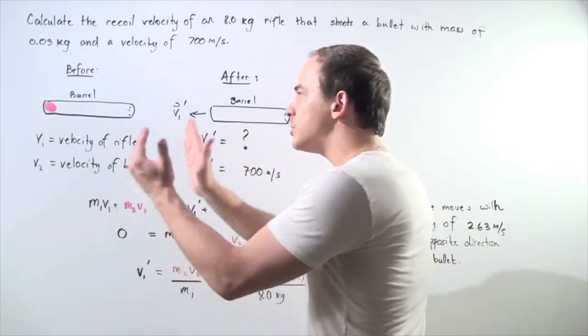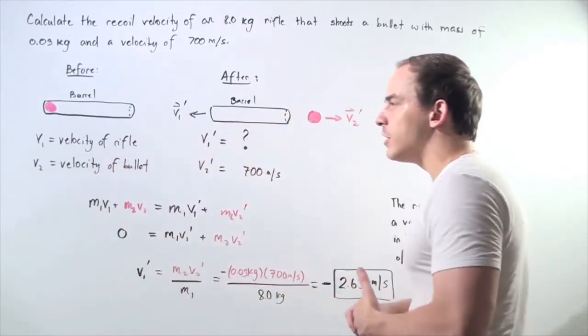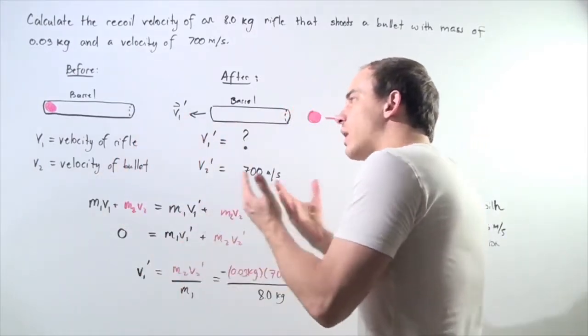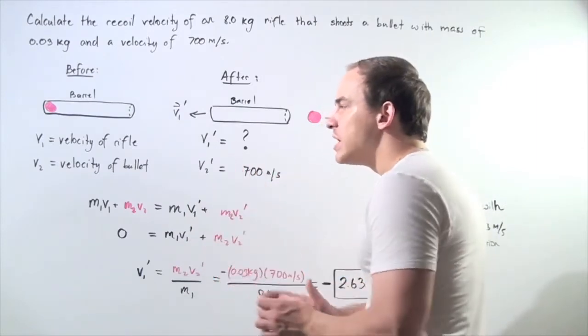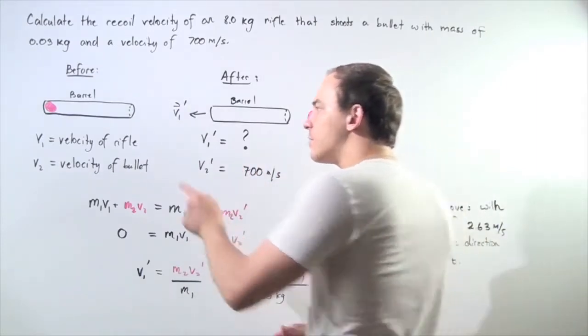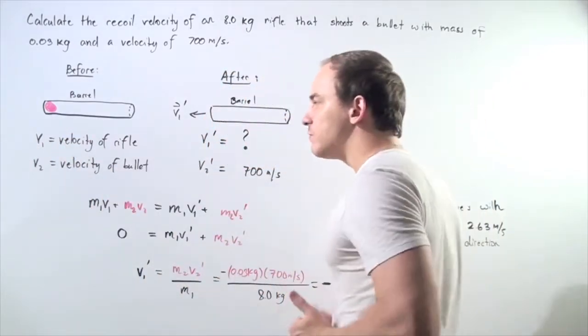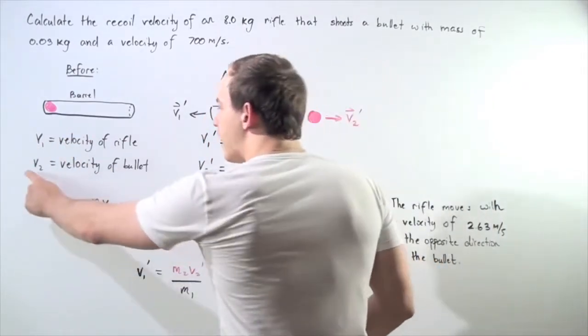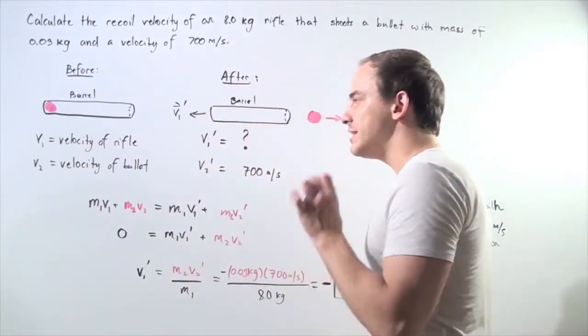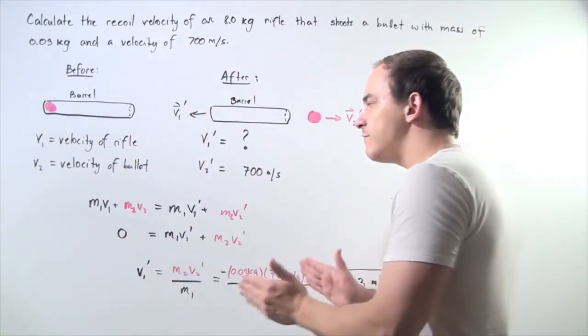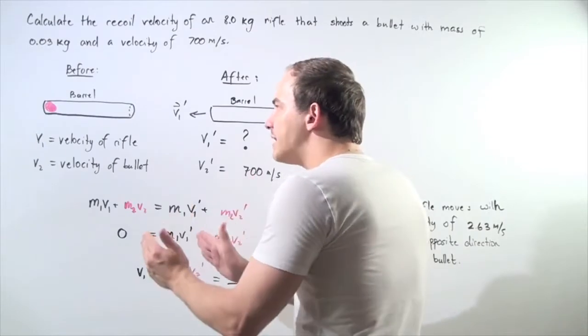Before we actually shoot the bullet with the rifle, both the bullet and the rifle are stationary. So our initial velocity of the rifle and the barrel V1 is 0 meters per second and the initial velocity of the bullet given by V2 is also 0.